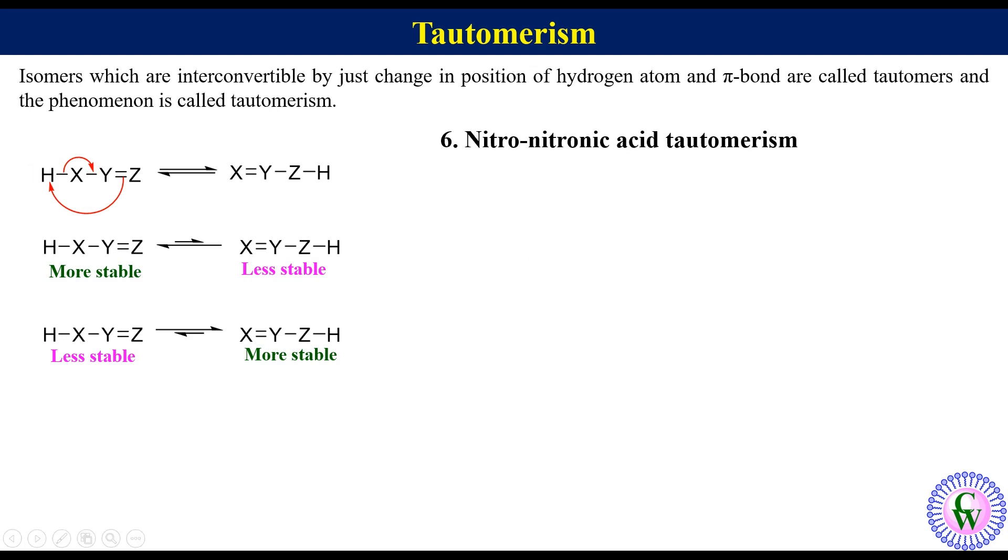Nitro-nitronic acid tautomerism. Nitroalkanes with at least one alpha hydrogen undergo proton shift to produce nitronic acid tautomer. Here, nitro tautomer is more stable than nitronic acid.